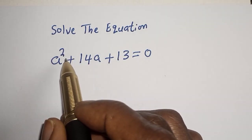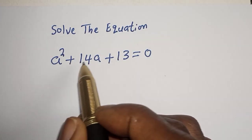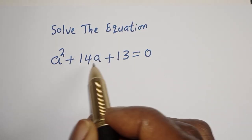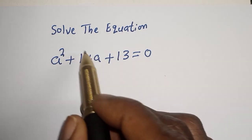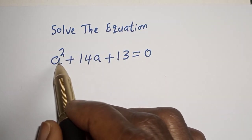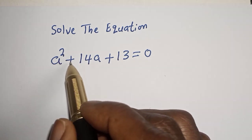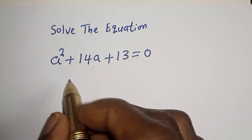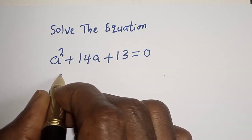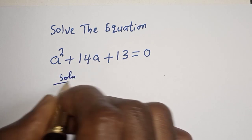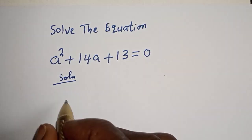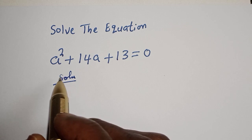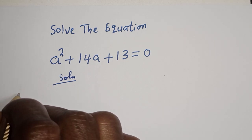Solve the equation a squared plus 14a plus 13 is equal to zero. Hello, welcome to MathThis. We want to find the value of a from this equation. Solution: in this question we are going to consider two methods. Let's consider the first method.